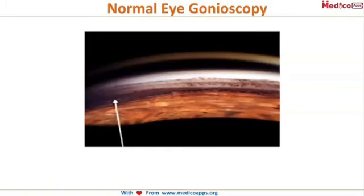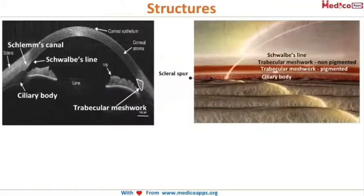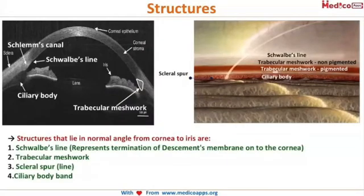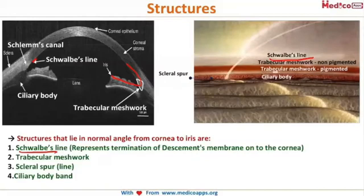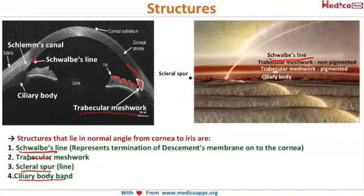On gonioscopy, you will see various structures in the angle that can be confusing. The structures that lie in the normal angle are visible on gonioscopy. The outermost structure is Schwalbe's line, which represents the termination of Descemet's membrane on the cornea. The next structure is the trabecular meshwork, followed by the scleral spur. The deepest, innermost structure is the ciliary body.